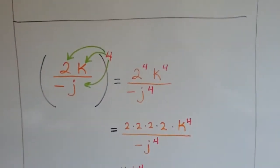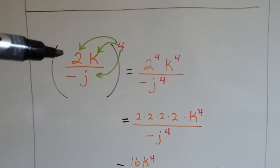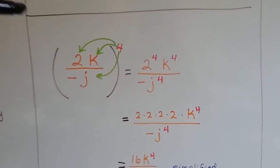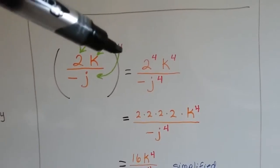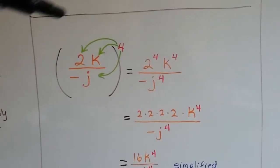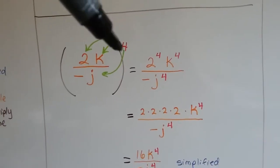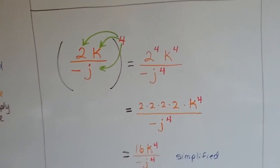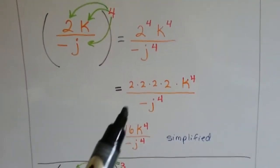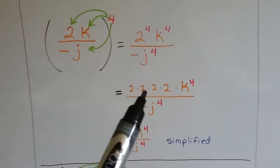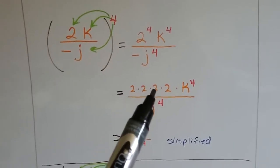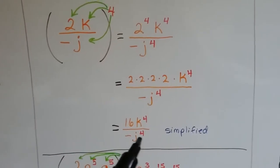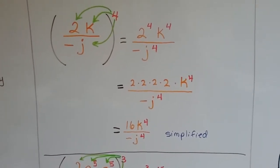Look at this one. This has got a negative. We've got 2k divided by negative j, raised to the fourth power. The 4 is going to get distributed to each one of these. So we're going to end up with 2 to the fourth power, k to the fourth power, divided by negative j to the fourth power. And we can't simplify the k and the j, but we can simplify the 2. 2 times 2 is 4, 4 times 2 is 8, 8 times 2 is 16. So we end up with 16k to the fourth divided by negative j to the fourth power. And now it's simplified.